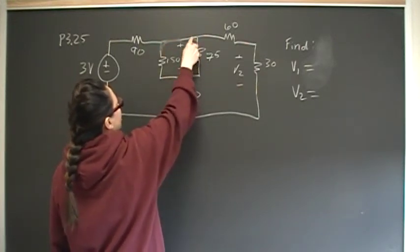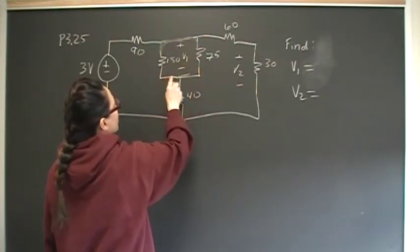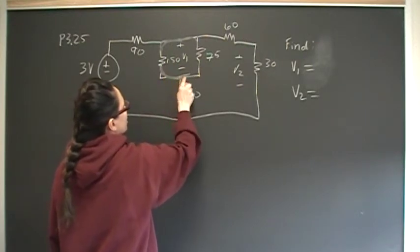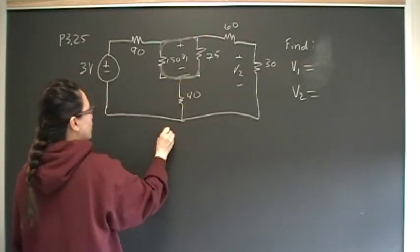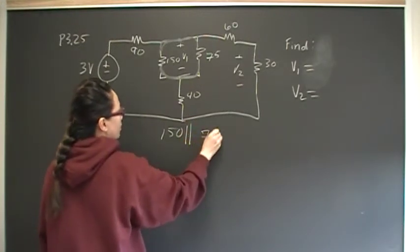A piece of wire going here, a piece of wire going here, and we also have, of course, the connection here. So we have 150 is in parallel with the 75.